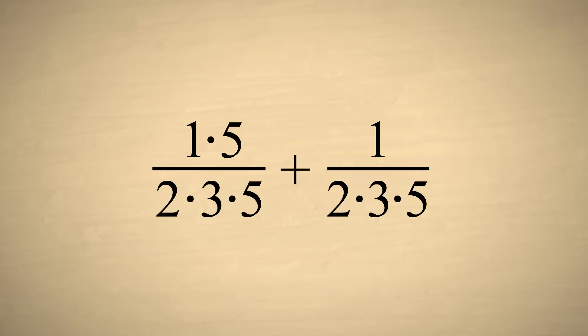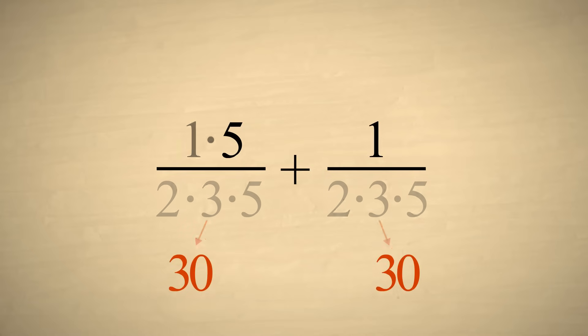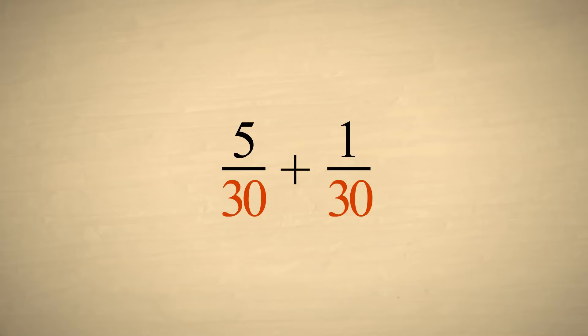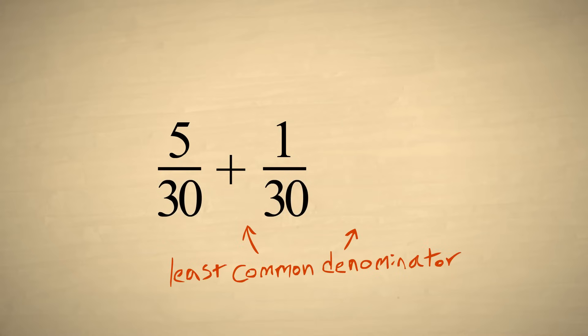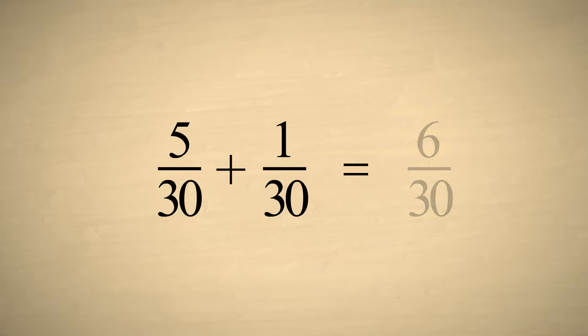Its denominator will gain the additional factor of five that it needs. The two fractions will then have a common denominator of thirty. This is the smallest denominator that will work for both fractions, so it is the least common denominator. Now, adding the two numerators, we get the sum of six-thirtieths.